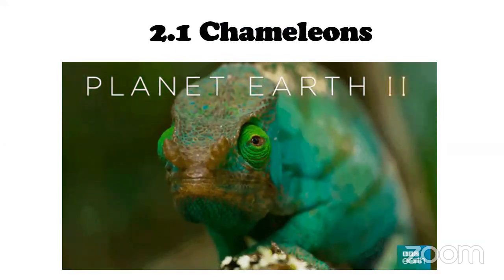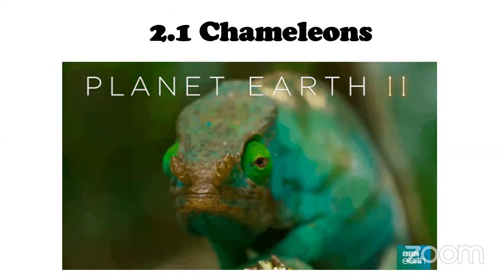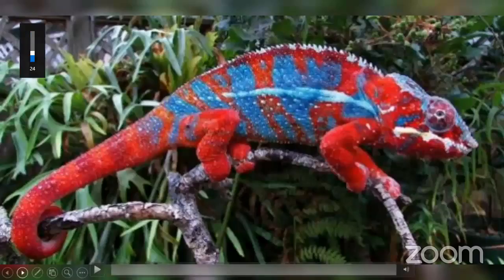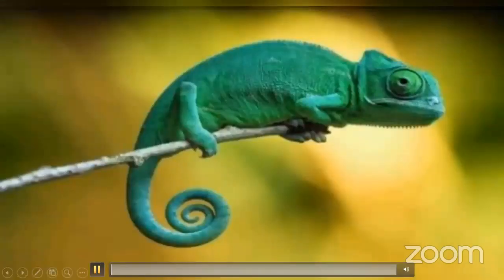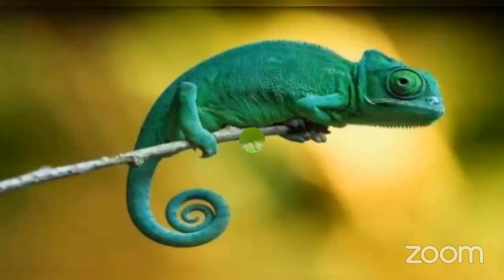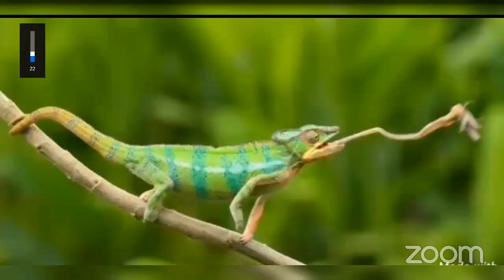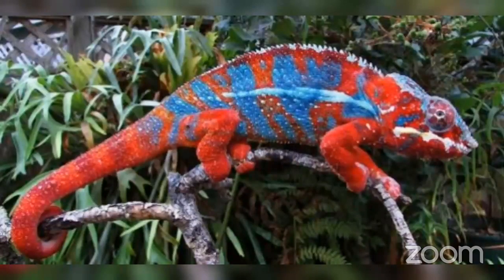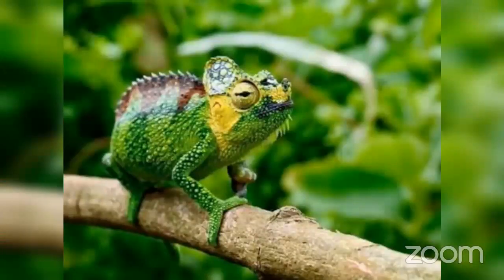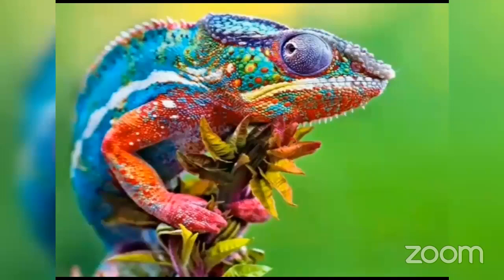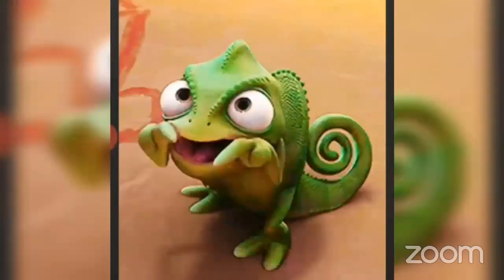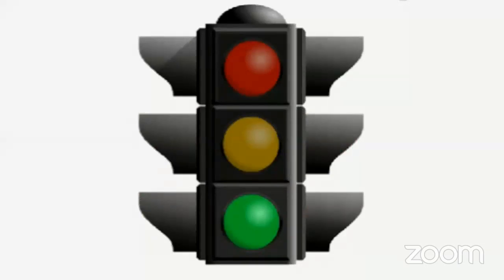Yes, you heard it right. Today we are going to learn a chameleon poem. Chameleons are seldom seen, seldom seen, seldom seen. They are red, they are orange, then they are green. They are beneath a stranger sight, stranger sight. Their colors change like traffic lights.